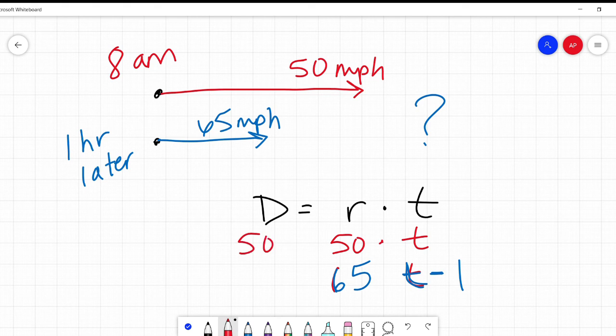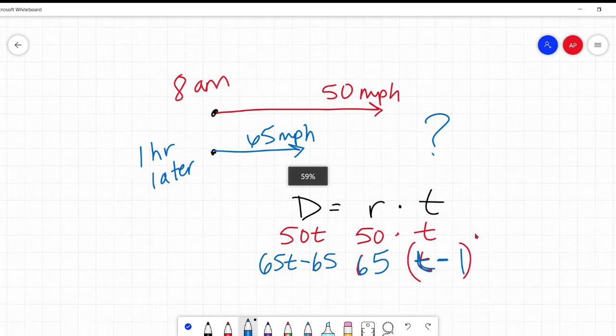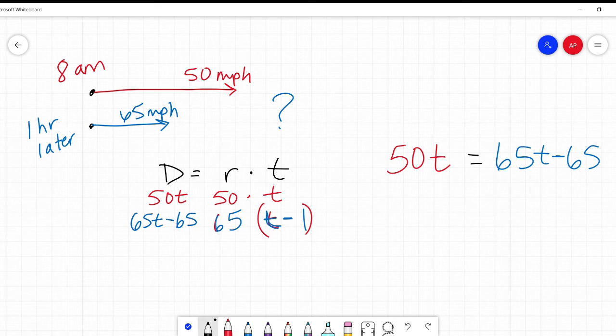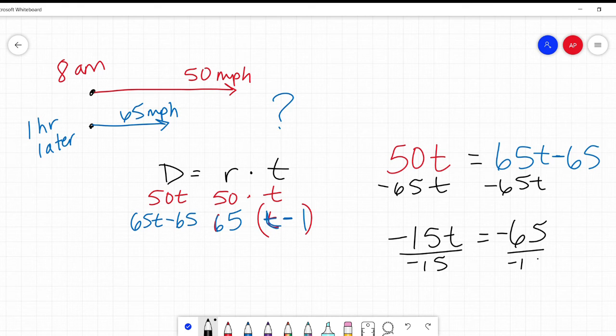Same thing. I'm going to multiply. 50 times T is 50T. 65 times T minus one. You do it like you distribute it. 65 times T is 65T. 65 times negative one, negative 65. Now, by the time they catch up, because they're driving in the same direction, they're both driving the same distance. They come at that same point. So, we can set the distances equal to each other. That's the difference on this one. We're not adding to anything. We're setting them equal to each other. I'm going to solve this. I'm going to subtract 65T from both sides. And I get negative 15T equals negative 65. I divide both sides by negative 15, T equals four and one-third.